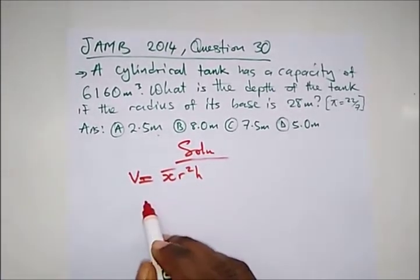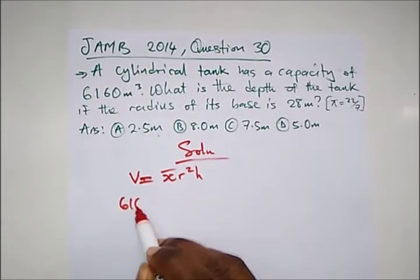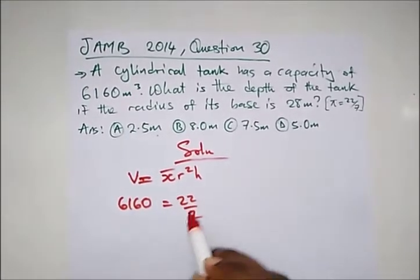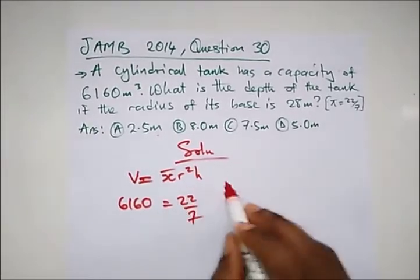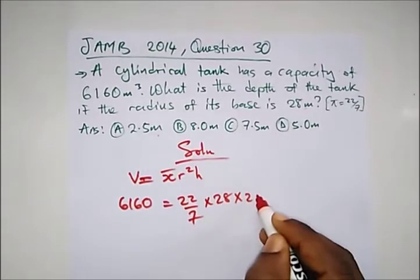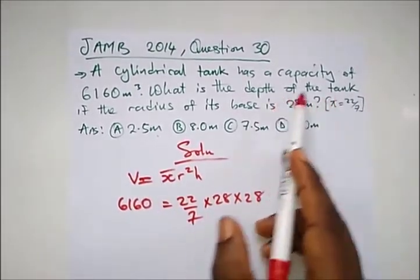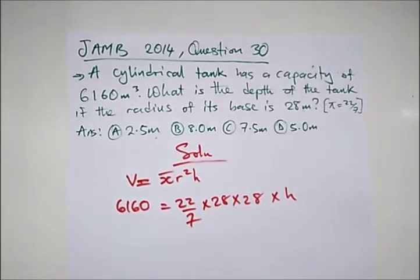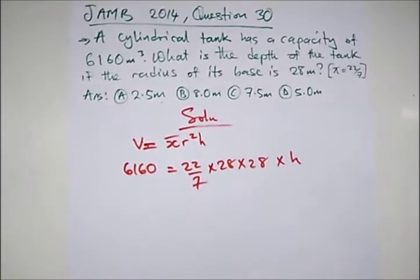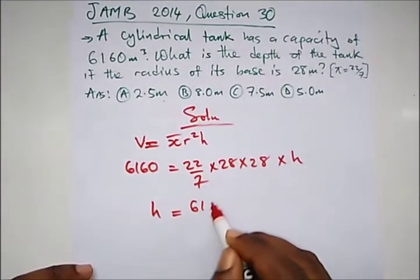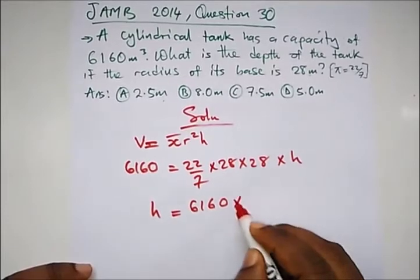We are given V as 6160, pi is 22 over 7, and the radius r is 28. We are told to look for the depth of the tank, which is the height H. So all we need to do is make H the subject of the formula. H equals 7 times 6160 divided by 22 times 28 times 28.